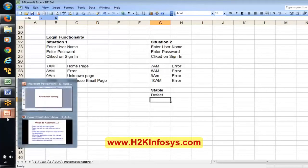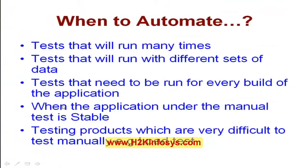If we have an unstable application, we generally will not go for automation. We might write the scripts, but we cannot execute them — and even manual testing is not possible on an unstable application. If the application is stable, then only we go for automation testing. Also, testing products which are very difficult to test manually — for example, load testing, which is a kind of performance testing — we must go for automation because we cannot rely on manual testing for performance.